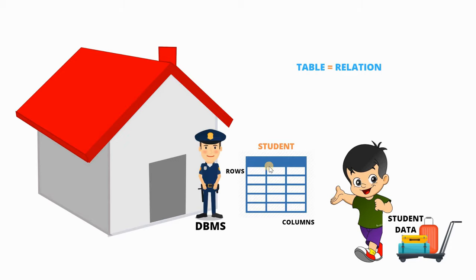Kal ko jab aap DBMS software se bolenge ki woh saara student ka data chahiye jinki age 15-20 ke beech mein hai, toh DBMS software kya karega — woh is table mein se un sabhi data ko nikalke dega. Kyunki hum usse bolenge ki jo Student naam ki almari hai uske andar se woh saara data aur rows nikalke do jismein age ki value 15-20 ke beech mein ho. Toh DBMS hamaari baat ko easily samajh payega, kyunki humne usko us table ka naam bata diya hai — toh communication ke liye yeh ek bohot hi achha tarika hai.